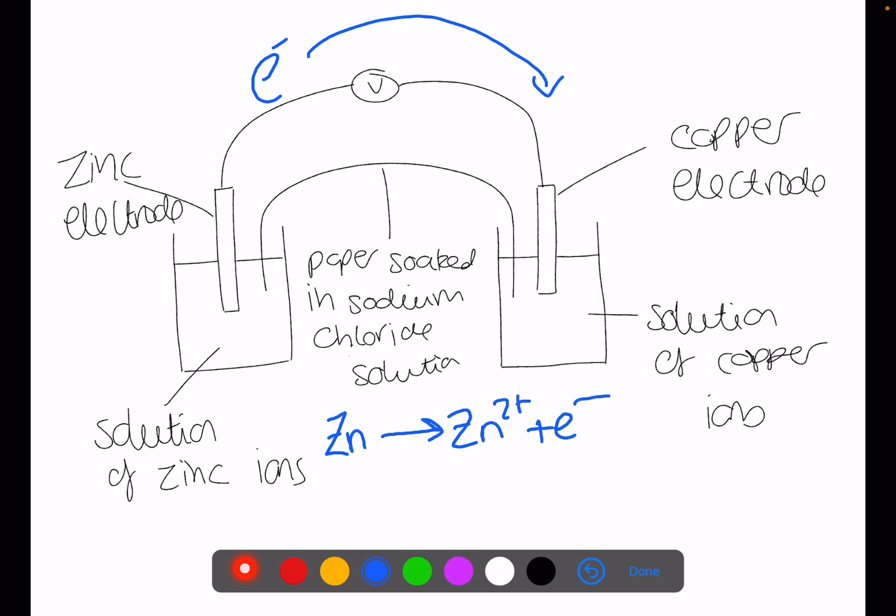In the beaker of copper ions the copper ions Cu2+ will pick up two electrons from the copper electrode and become copper atoms. This is reduction.